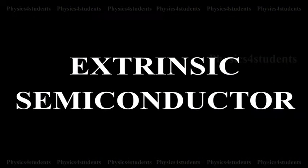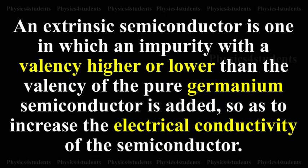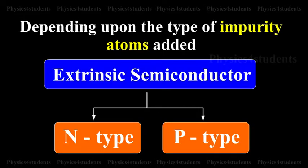Extrinsic Semiconductor. An extrinsic semiconductor is one in which an impurity with a valency higher or lower than the valency of the pure semiconductor is added so as to increase the electrical conductivity of the semiconductor. Depending upon the type of impurity atoms added, an extrinsic semiconductor can be classified as N-type or P-type.